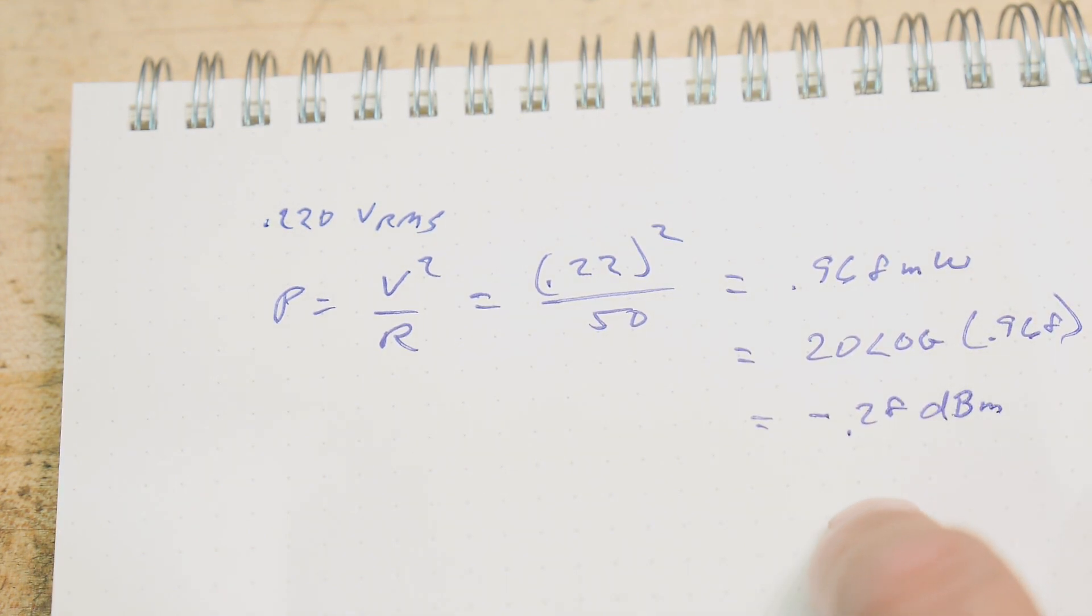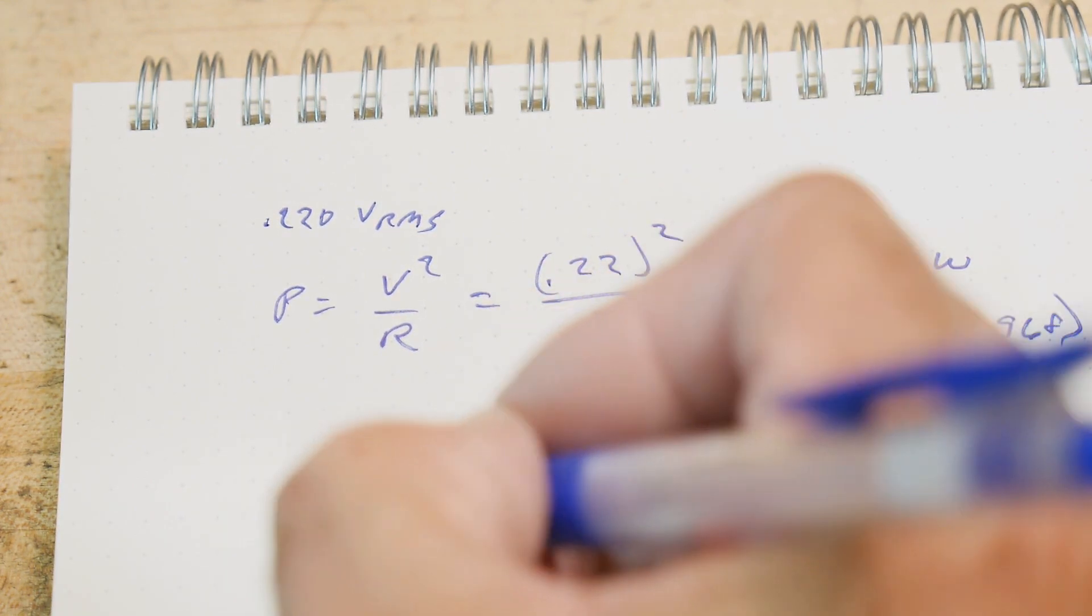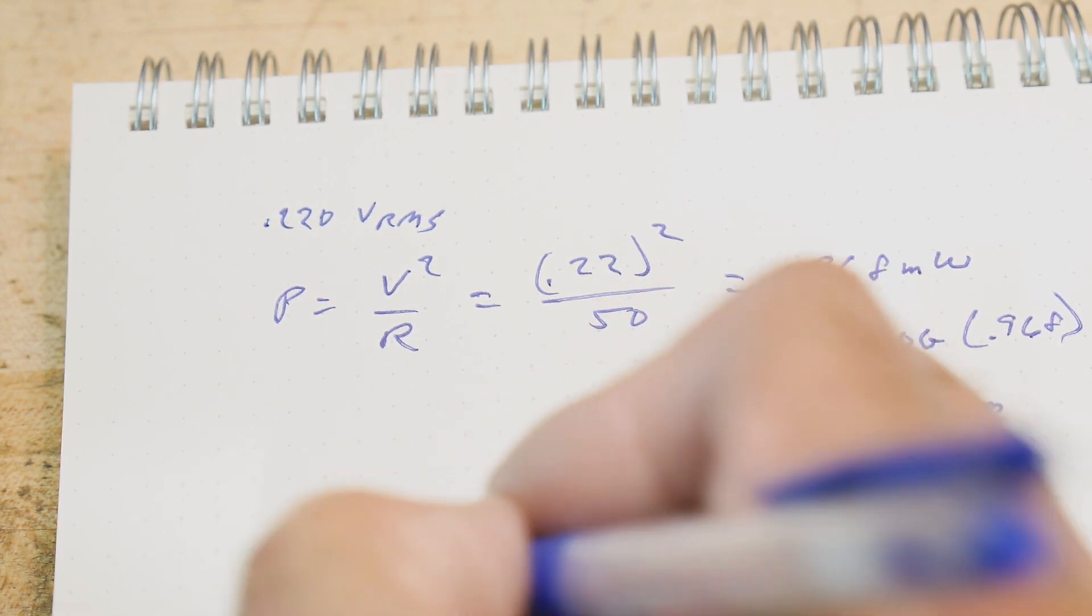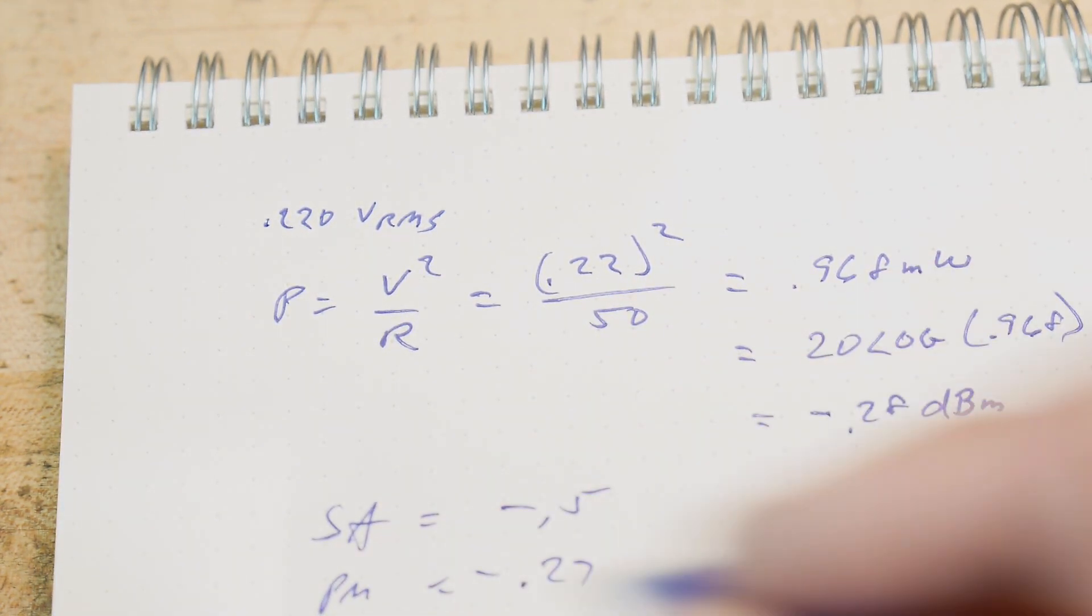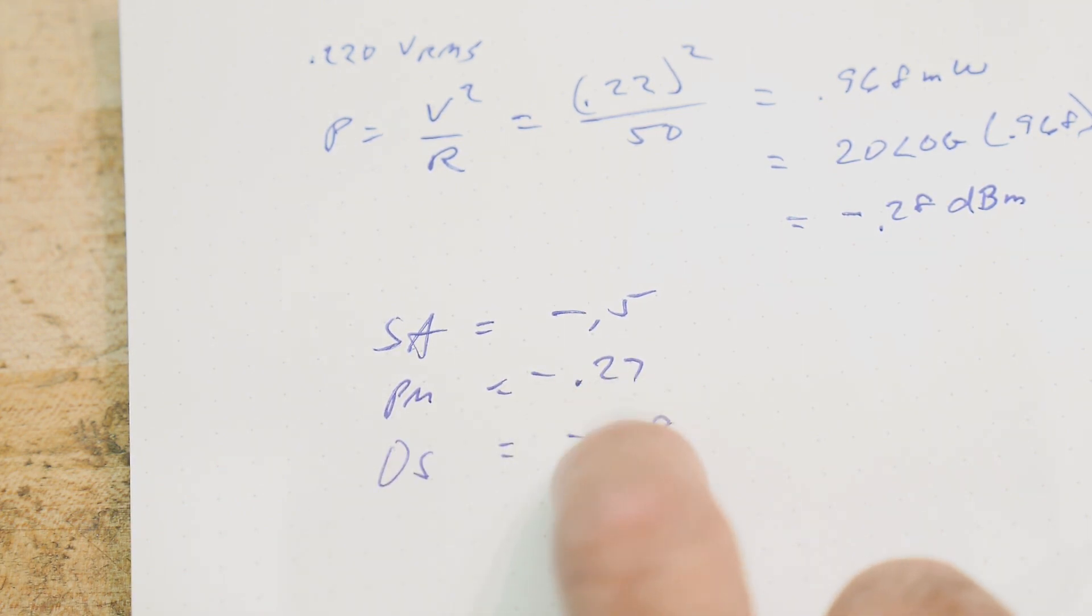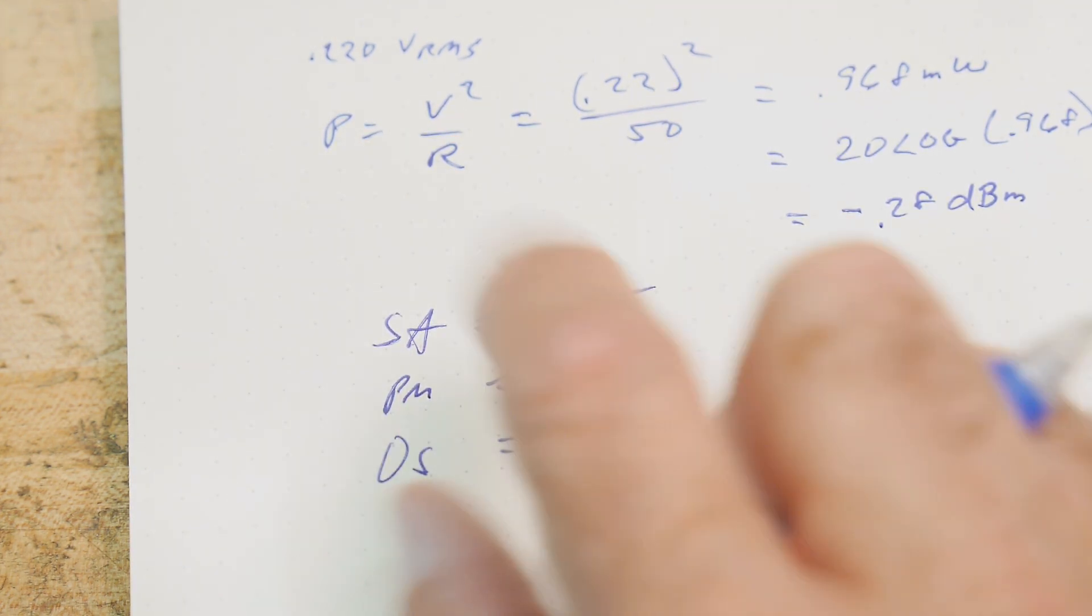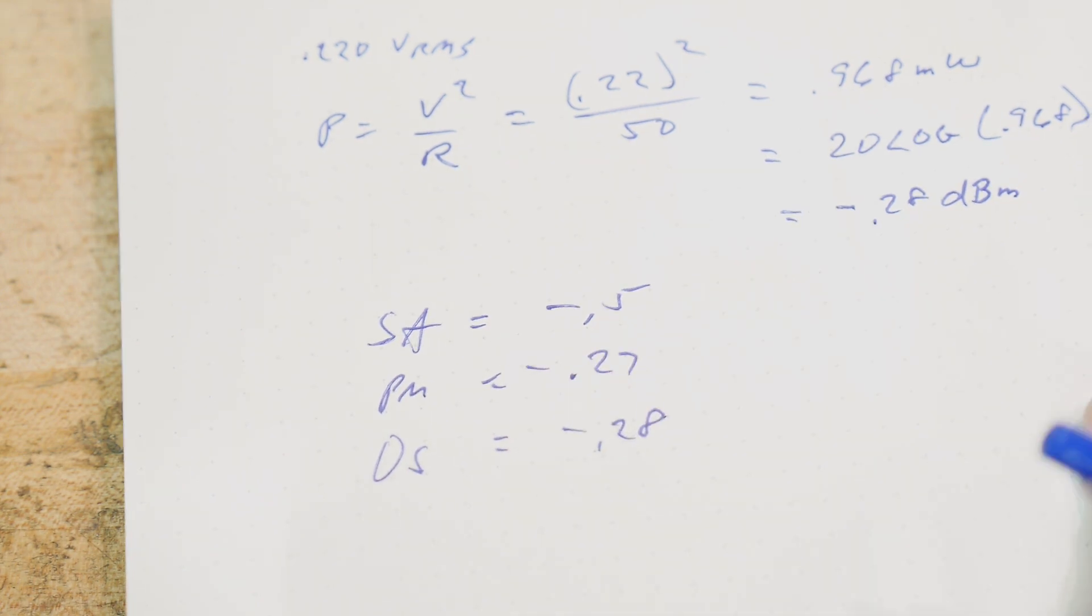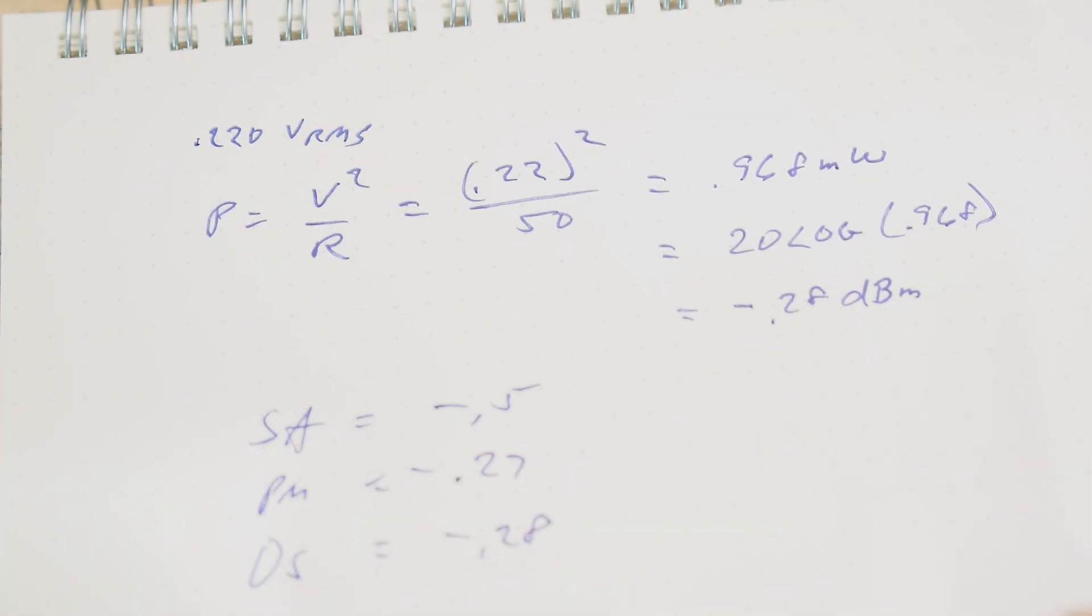So we have the spectrum analyzer measured minus 0.5. The power meter measured 0.27. And the oscilloscope measured minus 0.28. So you can see that these two are agreeing very well. The power meter and the oscilloscope. And the spectrum analyzers a little bit off. But spectrum analyzers are not the greatest thing to be measuring power with. But these other two methods are looking really good. So let's measure it a different way.